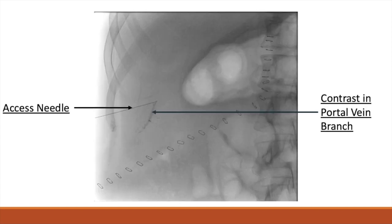Next, the stylet is removed from the access needle and contrast is injected into the needle under fluoroscopy to confirm access into an acceptable portal vein branch. We see contrast leaving the access needle and entering the portal vein branch accessed in the previous step, confirming the positioning of our access needle.